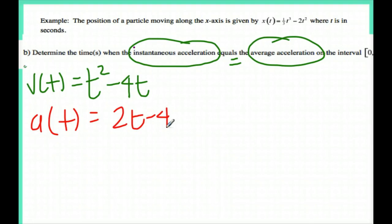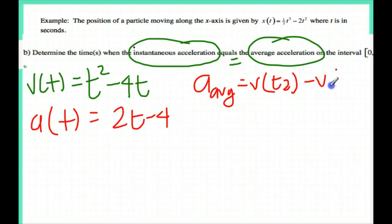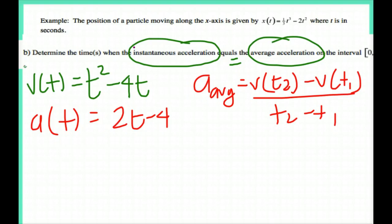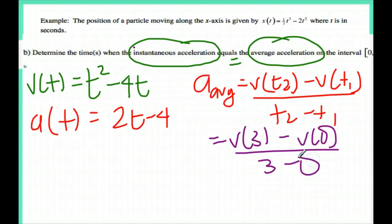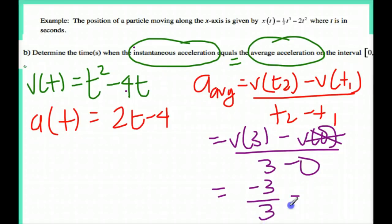Now I need to find the average acceleration, so the average acceleration equals v of t2 minus v of t1 over t2 minus t1. If I plug in 0 into my v, this cancels. If I plug in 3, I get 3 squared, which is 9, minus 4 times 3, which is 12. So 9 minus 12 is negative 3, divided by 3 equals negative 1.